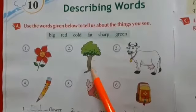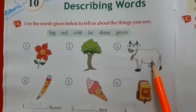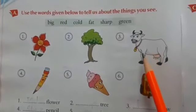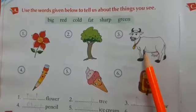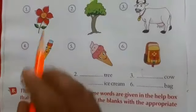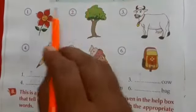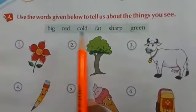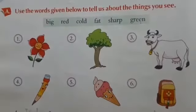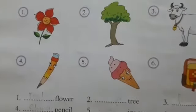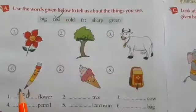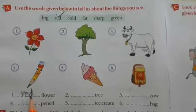Now look at the cow — the color, the shape, the size — is it thin or fat? These are all describing words. Let's get started. Here we have number one: flower. How is the flower? We can choose from this box: big, red, cold, fat, sharp, or green. The flower is red, so we choose 'red' and write it before flower — that is 'red flower.'